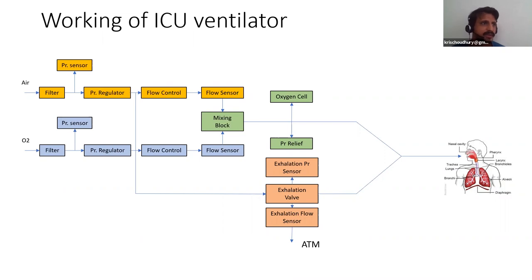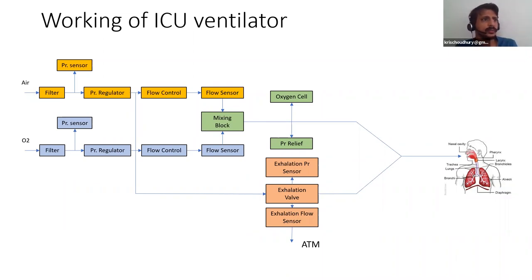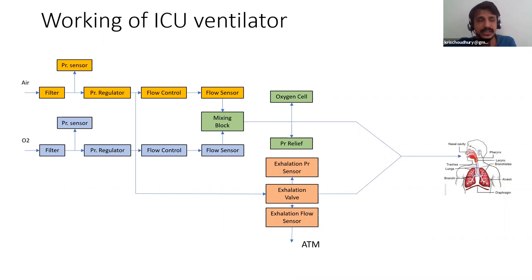Once pressure is regulated, flow control determines how much gas goes to the patient. This requires very high-fidelity valves that can control flow in milliliters per second — some with resolutions as fine as 0.5 ml per second. Such precise valves are incredibly expensive and difficult to manufacture, requiring clean rooms and very high finishing to achieve that level of fidelity.